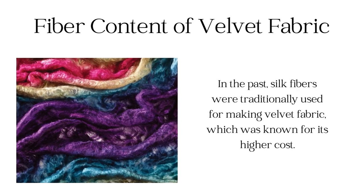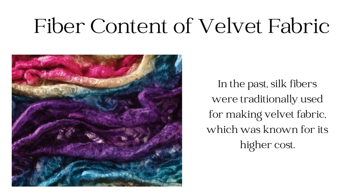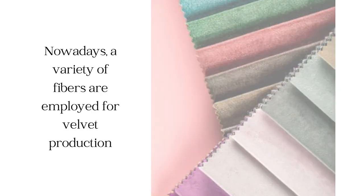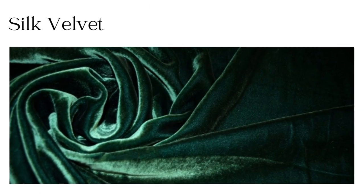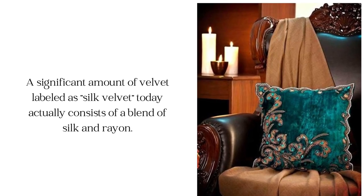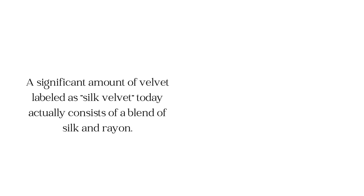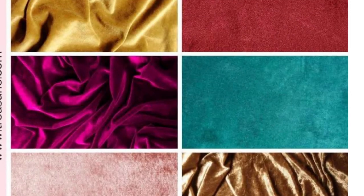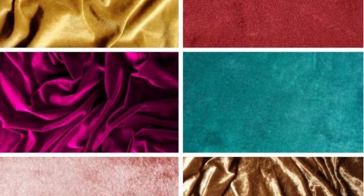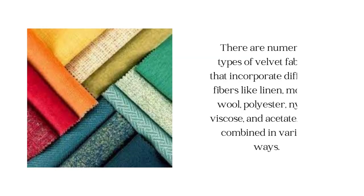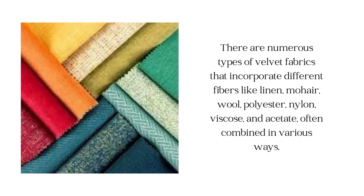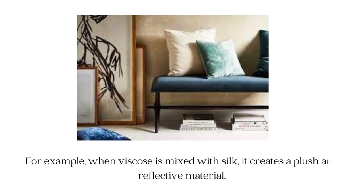Traditionally, silk fiber was used to make velvet fabric, which makes it an expensive one. But nowadays, different fibers are used to produce velvet fabric. The velvet available in the market is often called silk velvet, which is actually a mix of rayon and silk fiber. There are many types of velvet fabric made from different fibers like linen, wool, polyester, nylon, viscose, and acetate, and their blends are also used to produce velvet fabric.